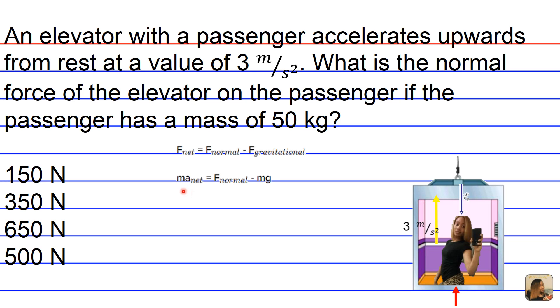So we break down F net into its components. That's going to be the mass of the passenger times the net acceleration is equivalent to F normal minus mg. So we rearrange the equation and we bring mg over to the right hand side and then reverse just to make things neater. So F normal is equivalent to mg plus the mass of the passenger times the net acceleration. So now we can multiply to get our force of gravity or the weight of the passenger.